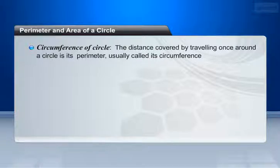Perimeter and area of a circle. Let us see what is circumference of circle. Circumference of circle: the distance covered by traveling once around a circle is its perimeter, usually called its circumference.